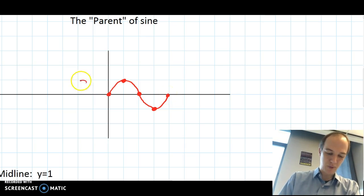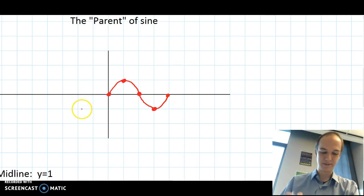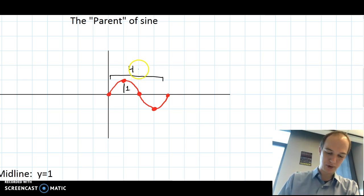Sine came from a wheel, and so the behavior of the function is the same as the behavior of a wheel. Up, down, middle, down, up, down, etc. So this function that you see right here has an amplitude of one unit and a period of four units.